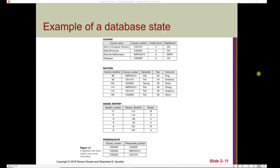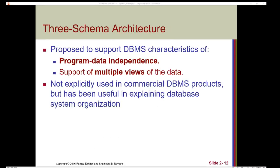Let's take a look at an example of a database state. Notice that here we have actual instances of each entity — in other words, we have data. If we take a look at the course table, we can see that we still have the schema — course name, course number, credit hours, and department — but we also have specific instances of each course, such as an intro to computer science course, a data structures course, a discrete mathematics course, and a database course.